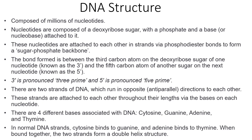Before we move into the actual process of DNA replication, let's have a look at DNA structure. DNA is composed of millions of nucleotides, and nucleotides are made of a deoxyribose sugar with a phosphate group and a nitrogenous base attached to it. These nucleotides are attached to each other via phosphodiester bonds to form a sugar phosphate backbone. The bond formed between the third carbon atom on the deoxyribose sugar of one nucleotide is known as the 3' end, and the fifth carbon atom of another sugar on the next nucleotide is known as the 5' end.